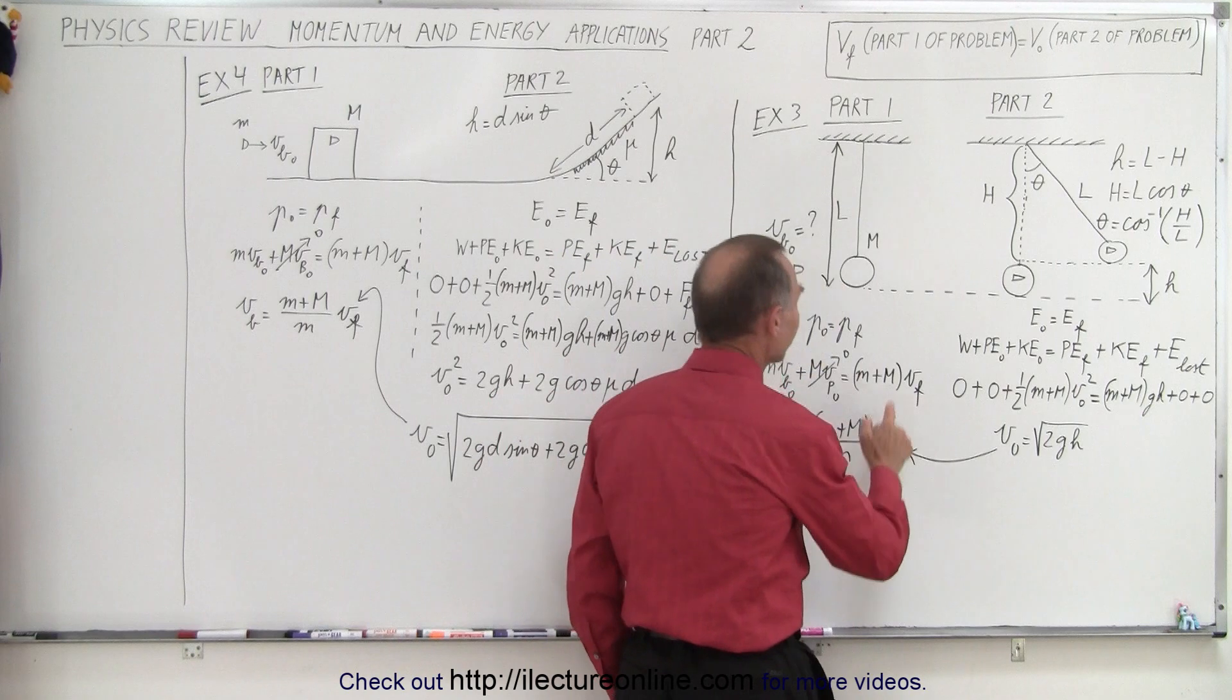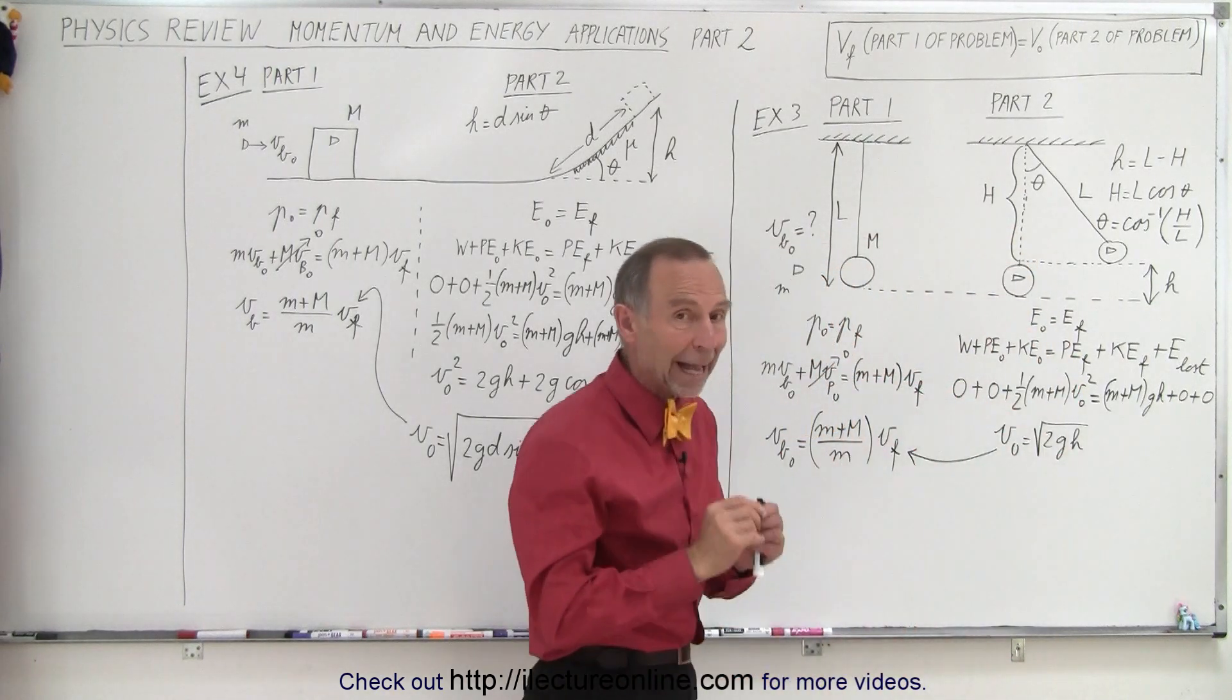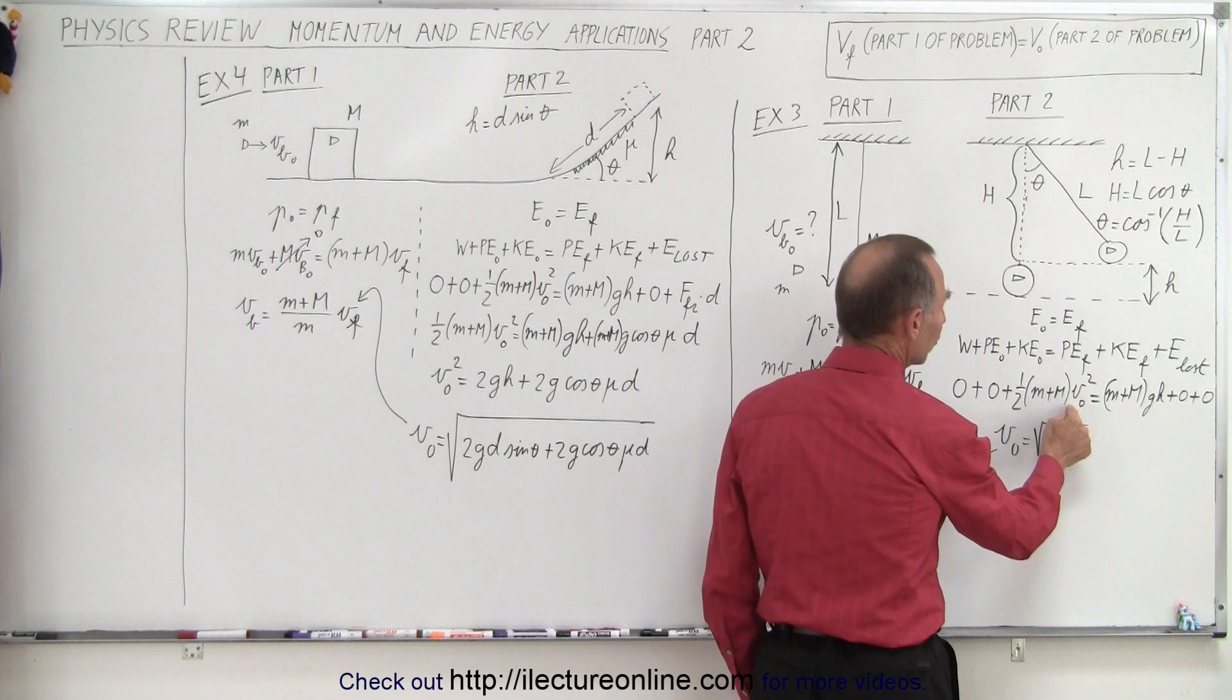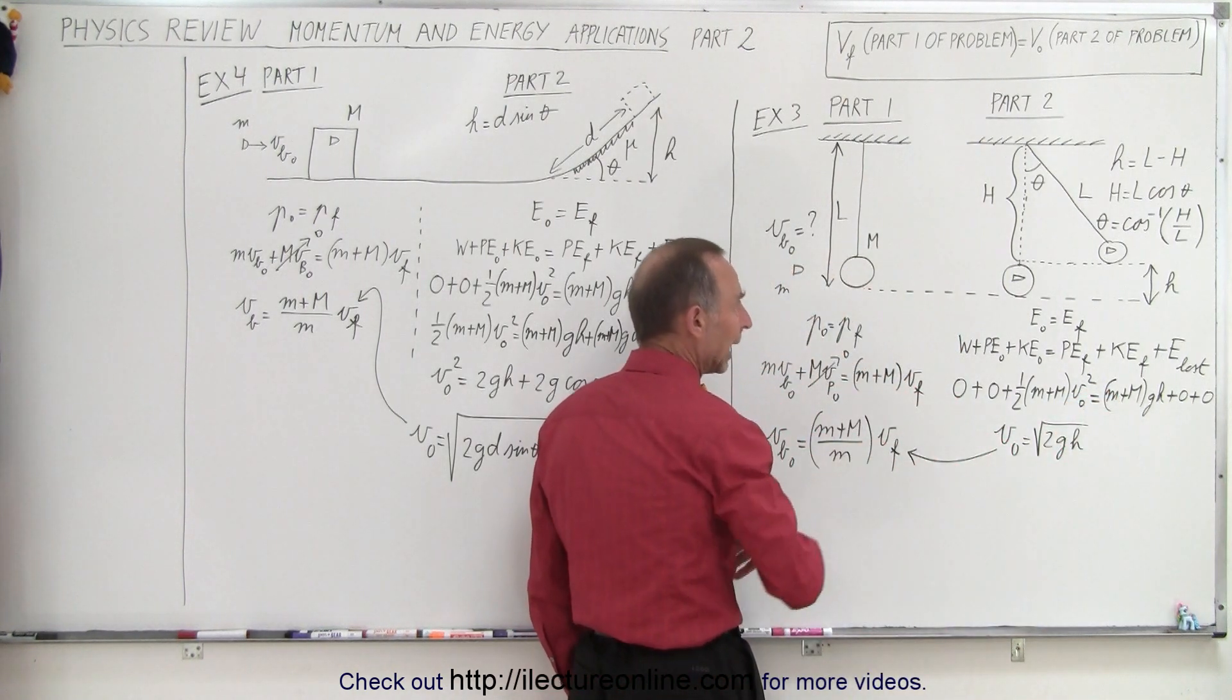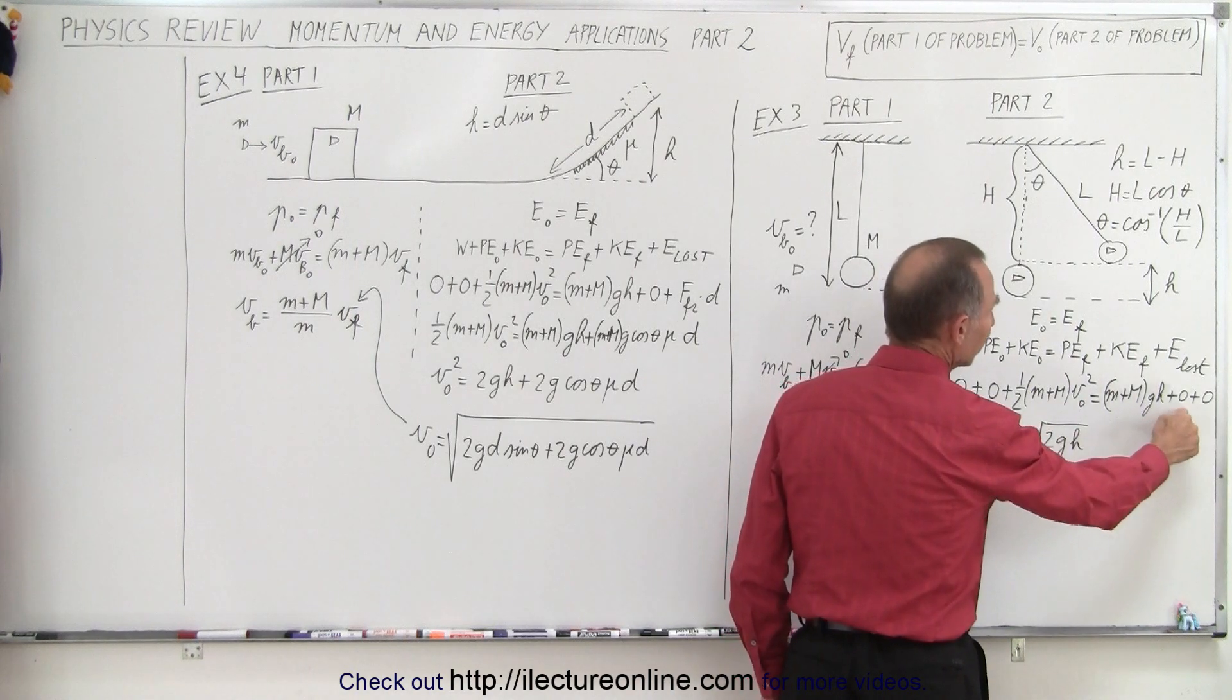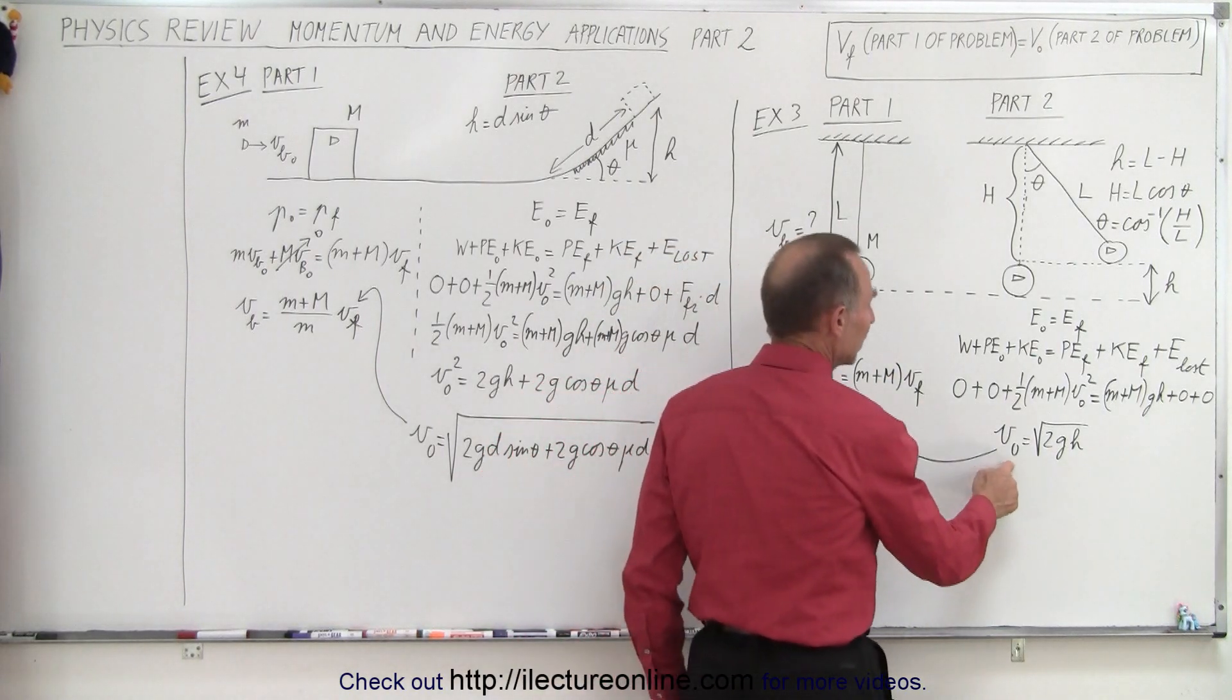However, we know that the final velocity of part one will become the initial velocity of part two. Imagine the bullet had just struck the pendulum, and the pendulum is beginning to swing up at that particular velocity. Here we can see that it had initially kinetic energy, one-half m, the two masses combined, times the initial velocity squared. And of course, this initial velocity is the same as this final velocity. At the end, when it swings to a particular height, it will have gained potential energy, mgh, of course, two masses combined. No kinetic energy final, no energy loss. There's no friction. There's no movement. When we get to the very top, it stops.